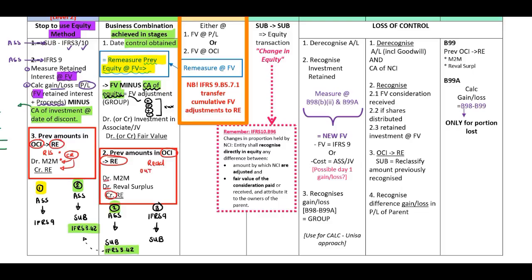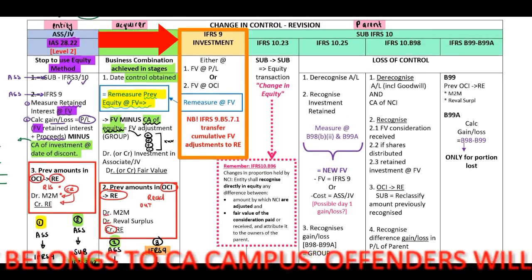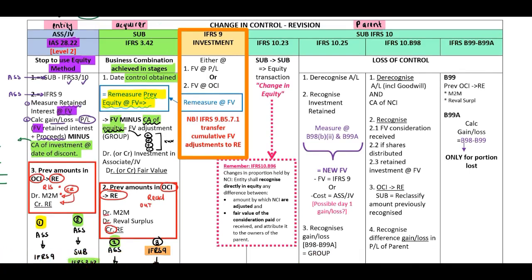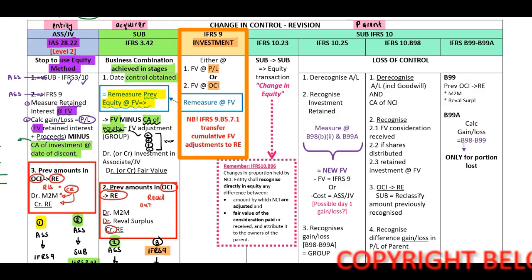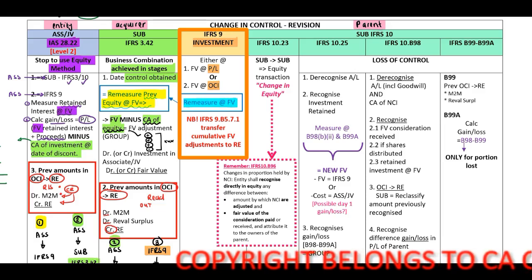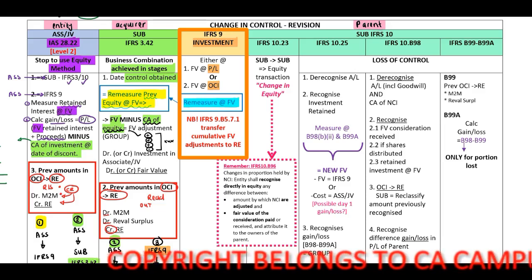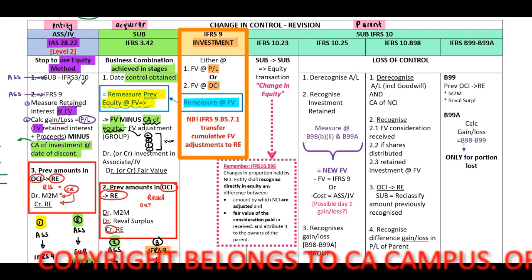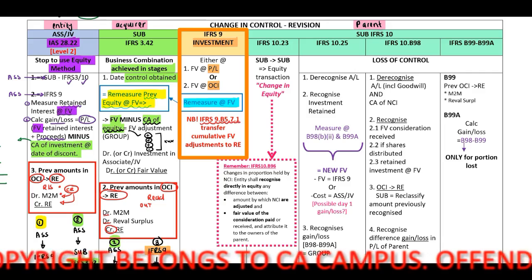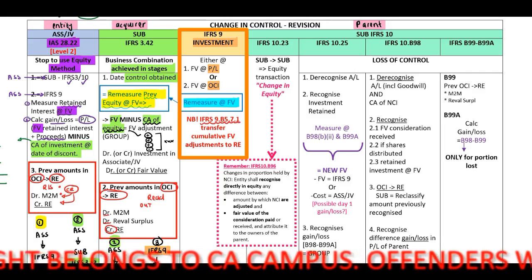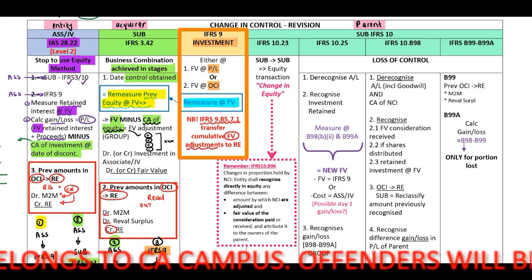Before we look at our next example where we have an IFRS 9 investment that changes into a subsidiary, let's quickly look at the IFRS 9 principles — the orange block on your screen. If there is an IFRS 9 investment, which will normally be either at fair value through profit or loss or at fair value through OCI, IFRS 9 indicates that when there is a change, we need to remeasure the interest at fair value. And then importantly, IFRS 9 paragraph B5.7.1: transfer any cumulative fair value adjustments to your retained earnings.